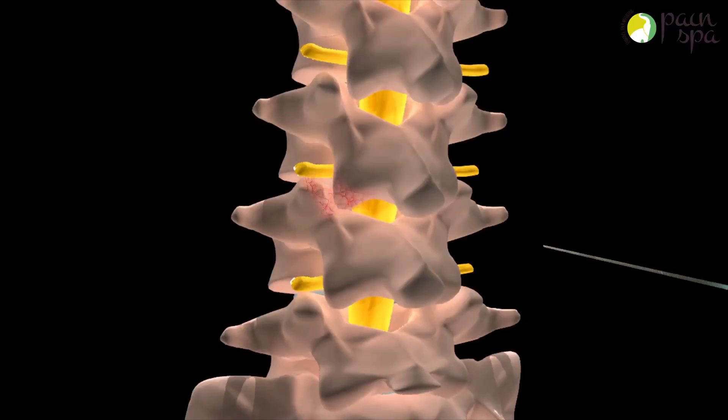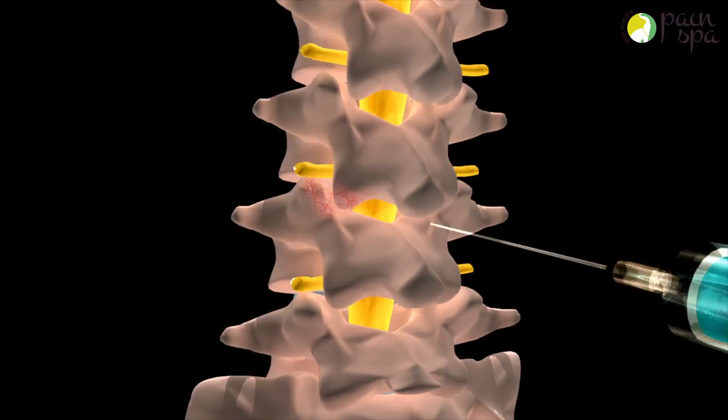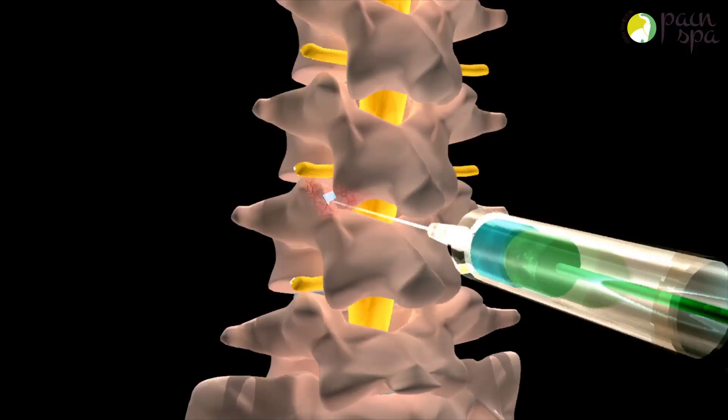Dr. Krishna will then use a special x-ray machine to guide the needle accurately into the facet joint. A mixture of local anesthetic and steroid is injected slowly into the joint.